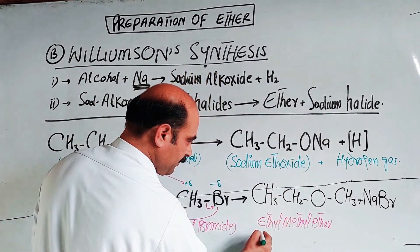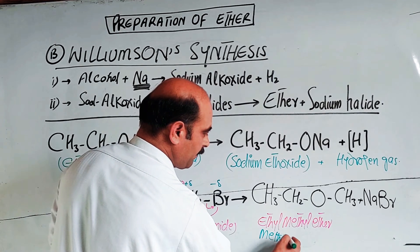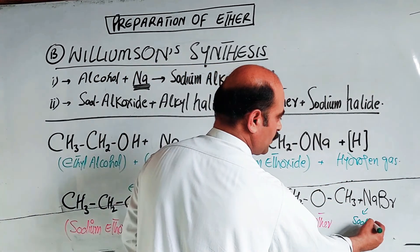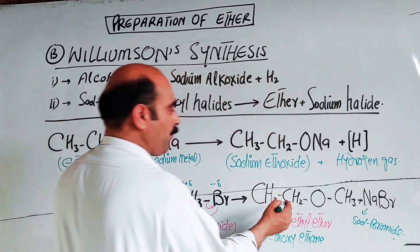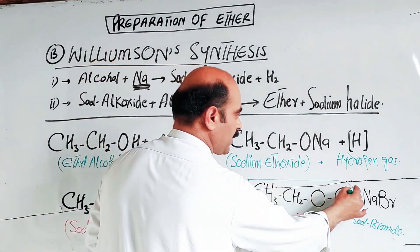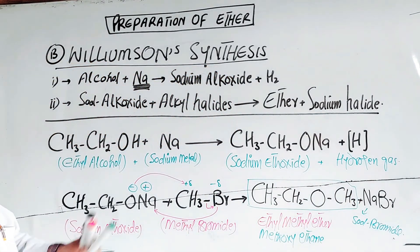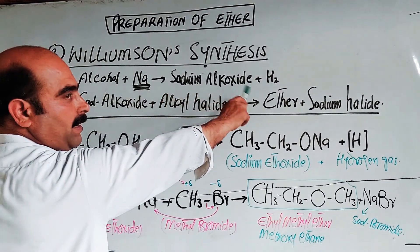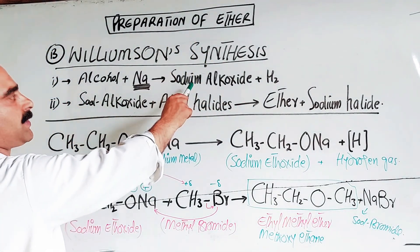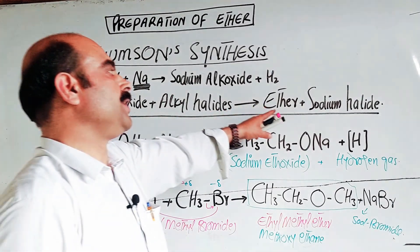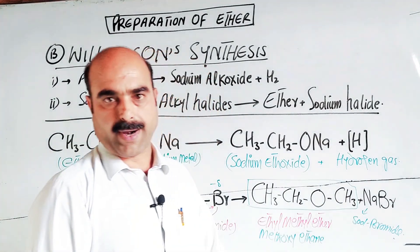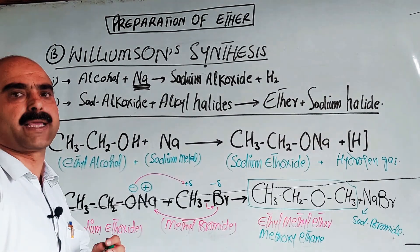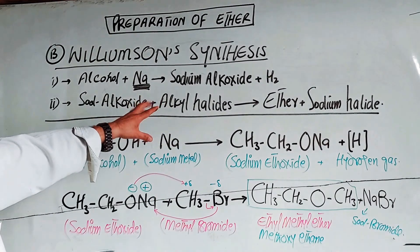The product formed is methoxy ethane (CH₃-O-CH₂CH₃), plus sodium bromide. So basically this is the preparation of ether by Williamson synthesis method. These were all about the preparation of ethers. The next topic is chemical reactivity of ethers.